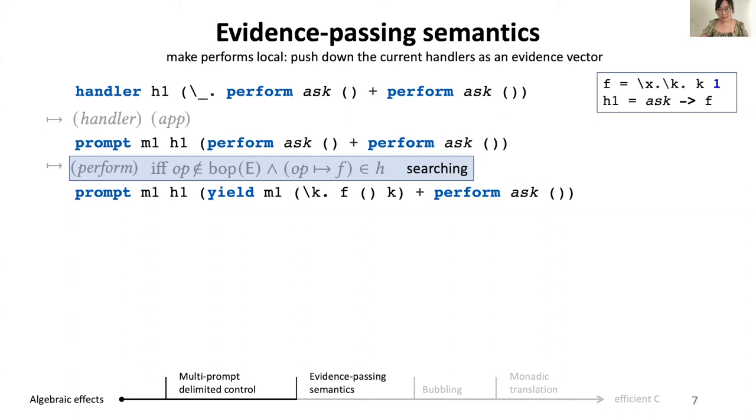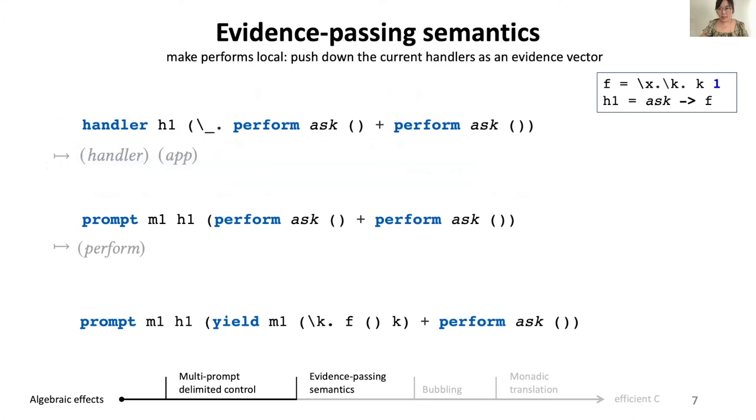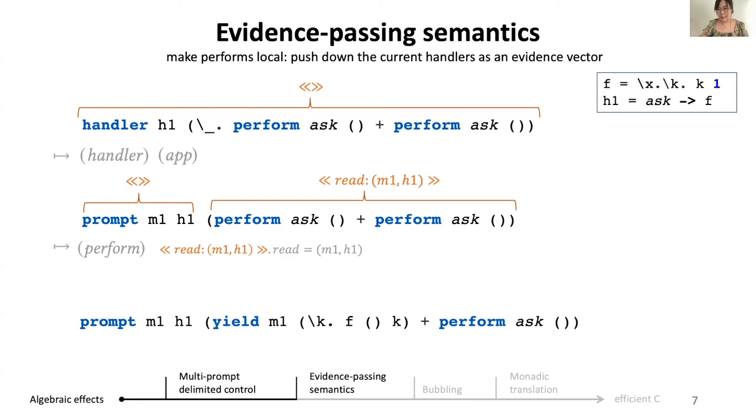First, we avoid searching using evidence passing semantics, where instead of searching for a handler in the evaluation context, we will push down the current handlers as an evidence vector. To illustrate the idea, we need a little bit more space between expressions. Evaluation always starts with an evidence vector. But after the handler evaluates to prompt, it inserts itself into the evidence vector for the rest of the computation. Now we have an evidence for read. At this point, the first perform ask can directly get the current evidence vector, look up the evidence for read, which gives us m1 and h1, and we can directly generate yield m1. And this is the essence of evidence passing.